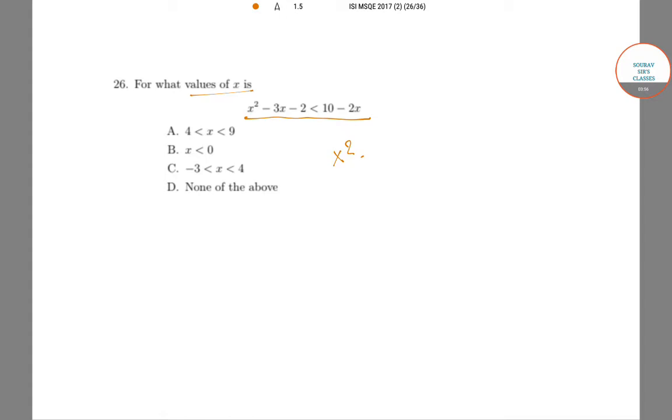Let us try to solve it. This says x² - 3x - 2 < 10 - 2x, which is the same as saying x² - 3x + 2x - 2 - 10 < 0.